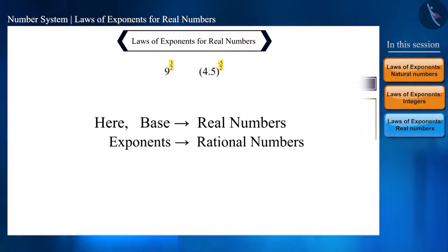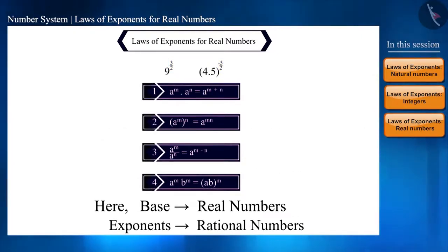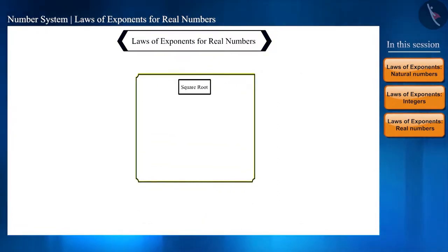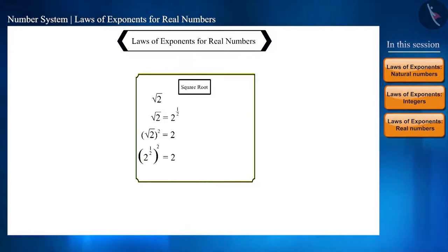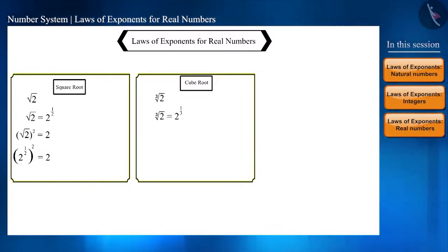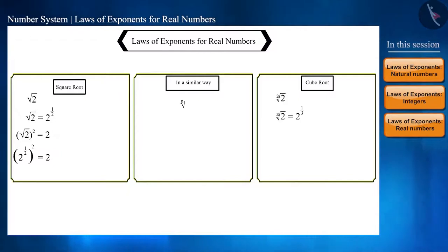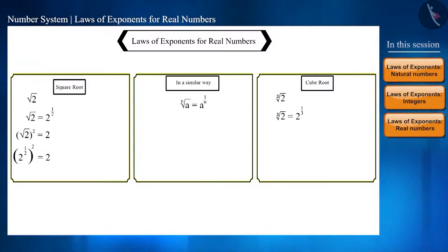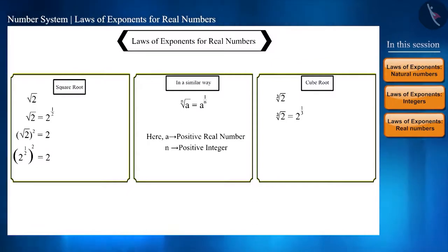Can we apply these rules to real numbers with rational exponents? If a number is given as a square root — for example, square root of 2 — it means its power is 1 by 2. If a cube root is given, say cube root of 2, it can be written as 2 raised to the power 1 by 3. In general, the nth root of a equals a raised to the power 1 by n, where a is a positive real number.